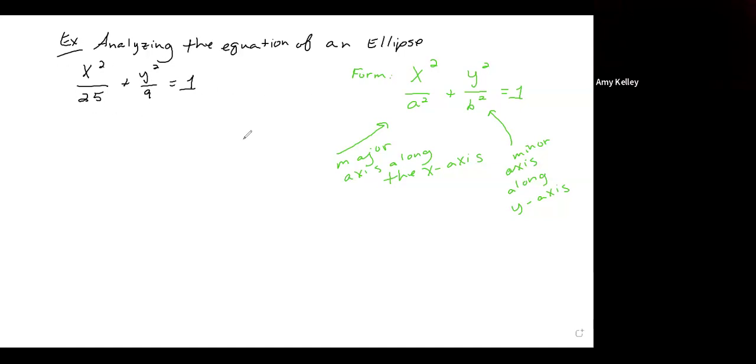Since this equation corresponds to the form shown on the right, we know that a squared equals 25 and therefore a equals 5. This is because the square root of a squared is a and the square root of 25 is 5. Similarly, b squared equals 9, taking the square root on both sides gives us b equals 3.